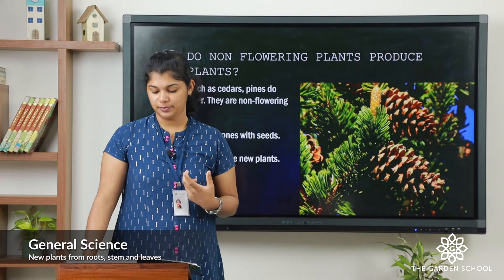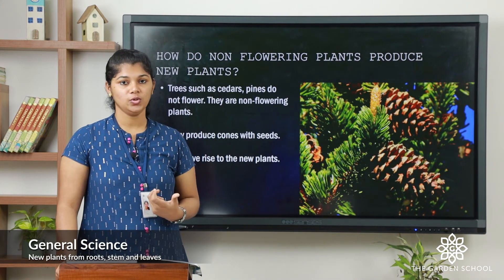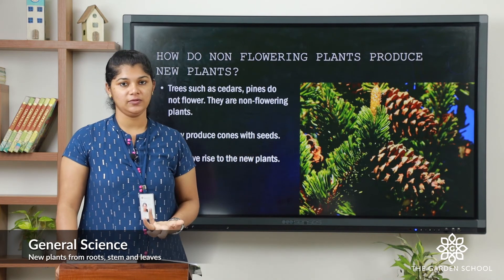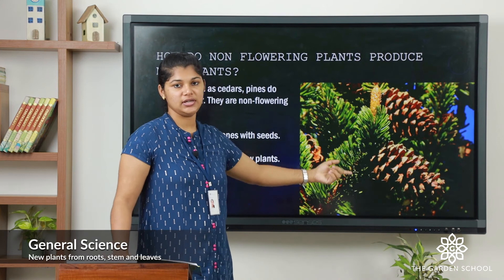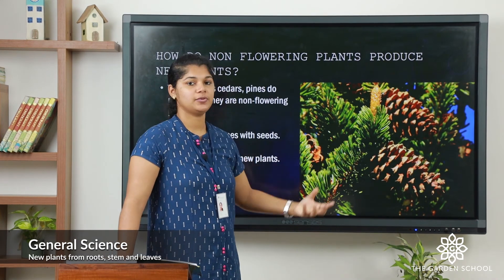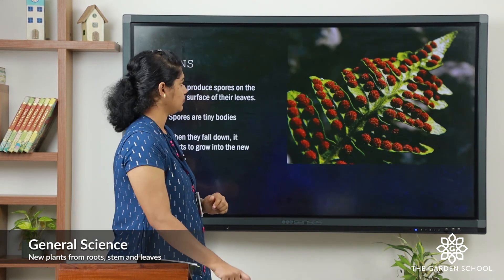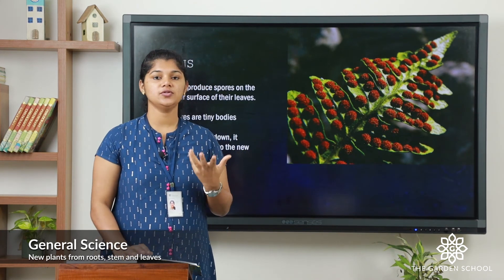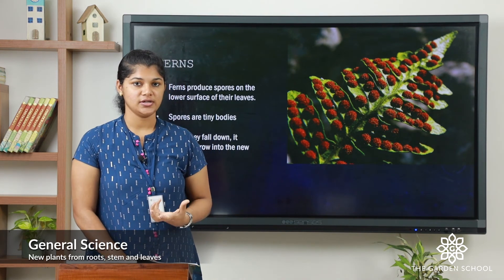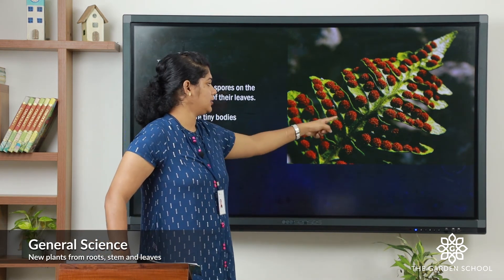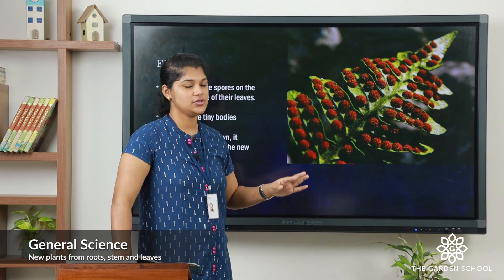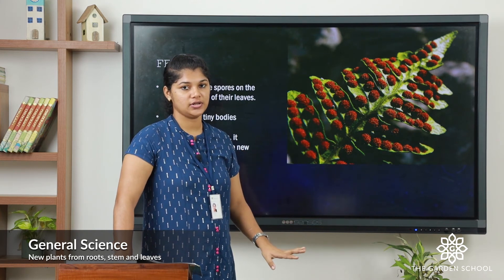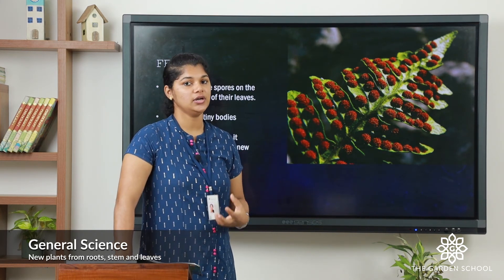How do non-flowering plants produce new ones? For example, pine and cedars — they don't have flowers but they produce cones instead, and from the cones they produce new ones. In this picture you can see ferns. Ferns do not produce flowers or any cones, but on the leaves you can see spores. Under the leaves there are different spores, and the spores fall down into the ground and start to grow into a new plant.